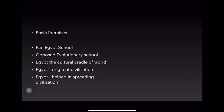Coming to the basic premises of the British school of diffusionism, they are also called the Pan-Egypt school. They opposed the evolutionary school and considered Egypt as the culture cradle of the world. They claimed that Egypt is the origin of civilization and that culture spread from there. Egypt being a fully fledged state with hydraulic and agricultural systems, laws, government, mummification, and burial of the dead helped in spreading civilization.